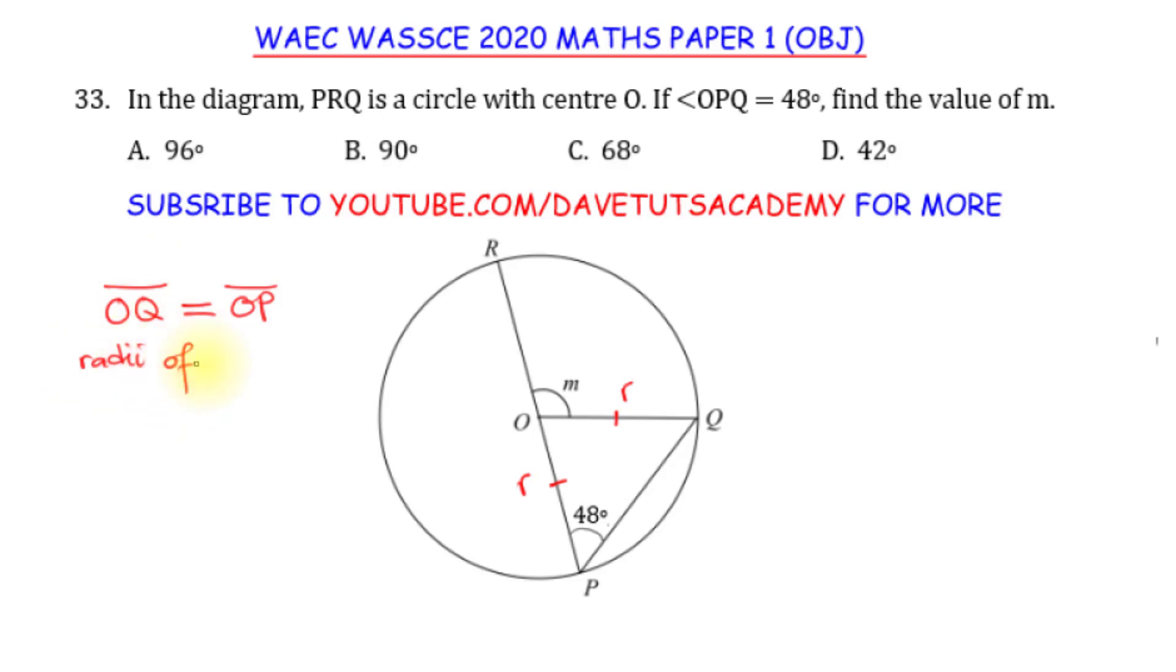They are radii of the circle, the same circle. They are coming from the center of the circle to the circumference of the circle. Now, if they are radii like this, that means that triangle OPQ is isosceles. If they are isosceles, then we know that the base angles are going to be equal because that is a property of isosceles triangle.